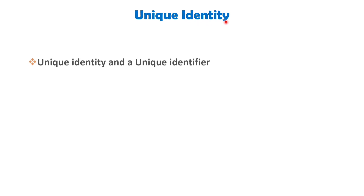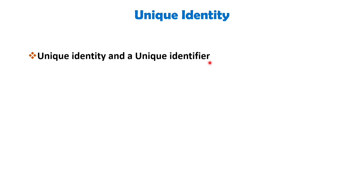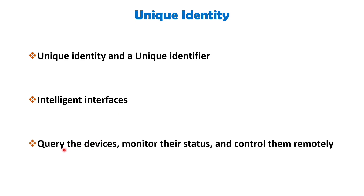The next IoT characteristic is unique identity. Each IoT device has a unique identity and a unique identifier such as an IP address or a URI — Uniform Resource Identifier. IoT systems may have intelligent interfaces that adapt based on context, allowing communication with users and the environmental context. These interfaces allow users to query devices, monitor their status and control them remotely in association with control, configuration and management infrastructure.